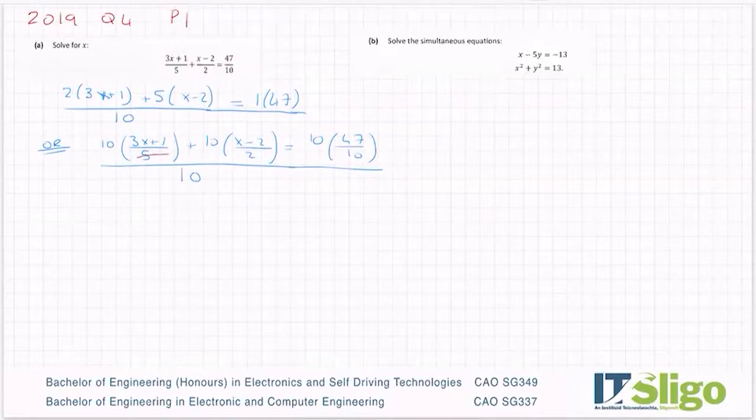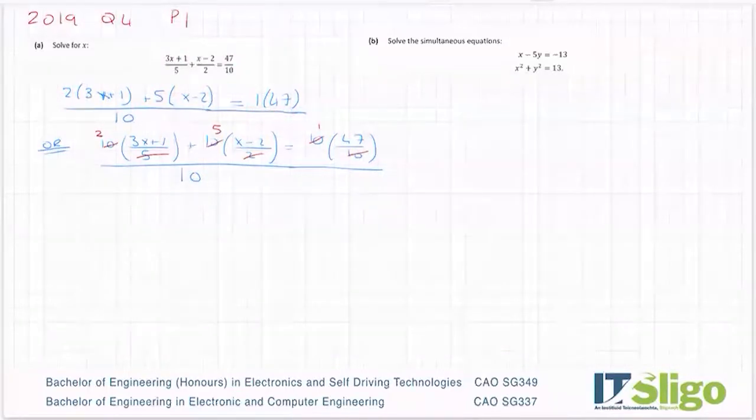What ends up happening is that 5 divides into 10 twice and you get the 2 that I have here. The 2 divides into the 10 five times and you end up with the 1 that I have here.